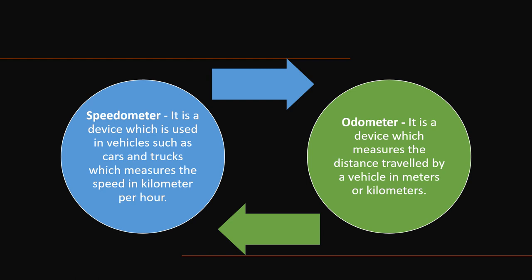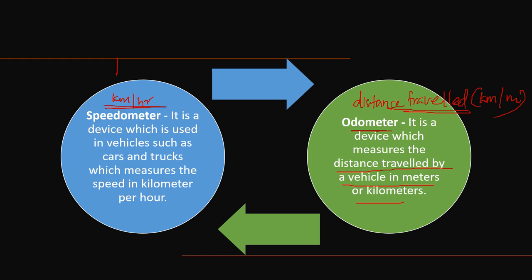Speedometer and odometer are two different measuring devices. A speedometer is a device used to measure the speed of a vehicle in km per hour. An odometer is a device that measures the distance traveled by a vehicle in meters or kilometers. So: speedometer measures speed, odometer measures distance traveled.